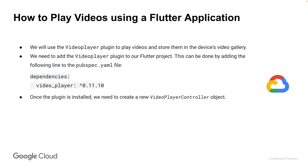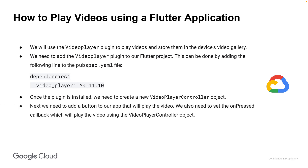Once the plugin is installed, we need to create a new VideoPlayerController object. This can be done by adding the video player package and then creating a new VideoPlayerController object. Now we need to add a button to our app that will play the video. We also need to set the onPressed callback, which will play the video using the VideoPlayerController object.